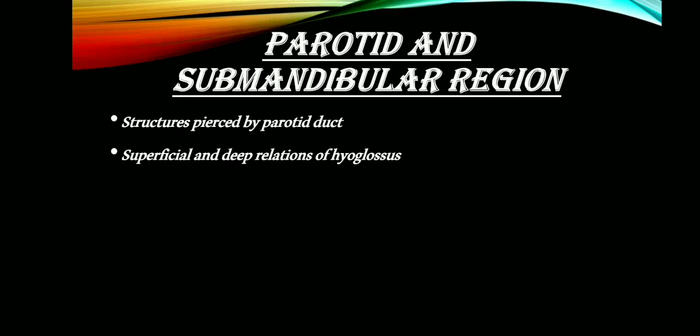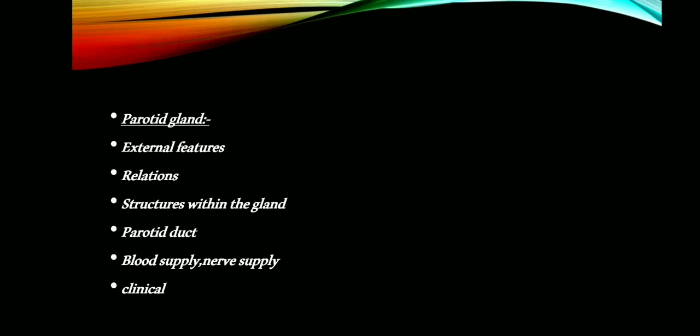Moving on to the chapter parotid gland and submandibular region. The various enumerate questions that can be asked are: structures pierced by the parotid duct, which is very important; and superficial and deep relations of hyoglossus muscle, which is also very important. A long question on parotid gland can be asked, and you have to write about the external features, relations, structures within the gland, parotid duct, blood supply, nerve supply, and the clinical aspects. This question is very, very important. Relations of hyoglossus is also an enumerate question.